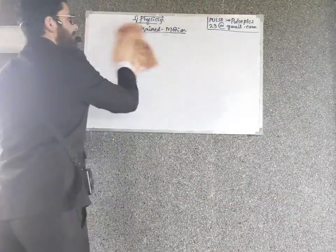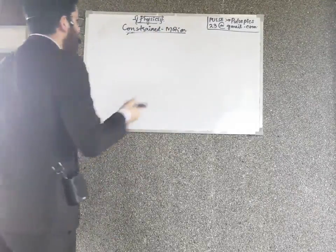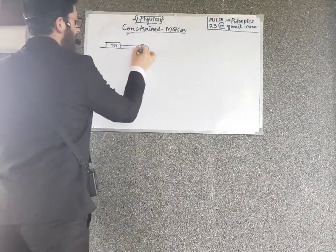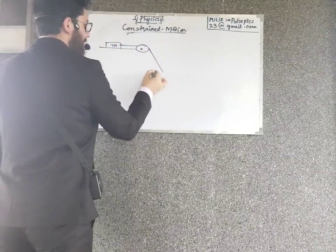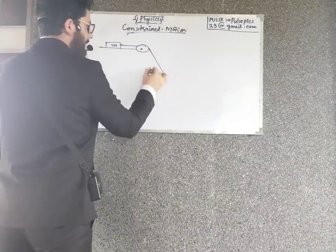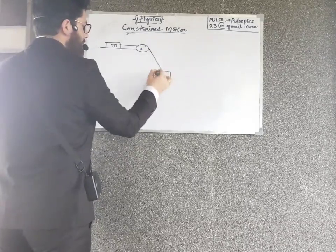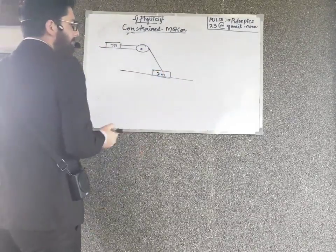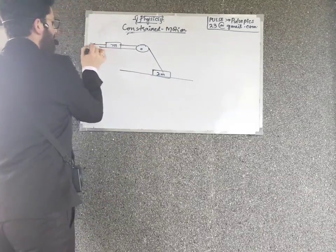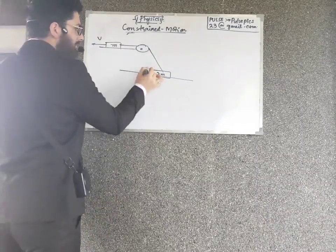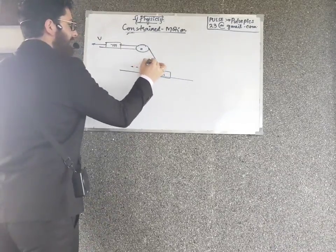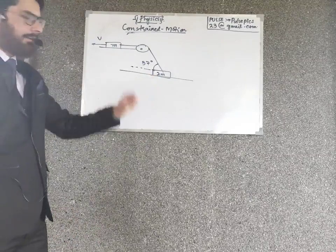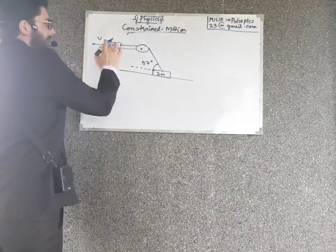Now let us see how we can use this concept in simple problems. Suppose I have a block of mass m, and the string makes an angle of 37 degrees with the horizontal. I can tell you what the velocity of the mass is. It is a simple problem. If I say this block is moving along the ground with velocity v, I need to find the velocity of the block.